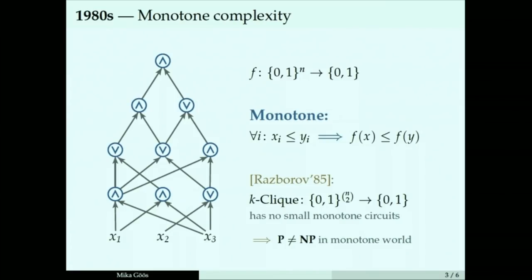Maybe it was a bit too optimistic. Turns out these models are a lot less powerful than fully general algorithms. One result to this effect was Tardos's function. She came up with a monotone function, I'll just call it Tardos, a monotone function that requires large monotone circuits, exponential size ones. Yet you can still compute the function efficiently with the usual algorithms. So it's a problem in P. This is showing that monotone circuits don't really model well what happens in the real world with negation gates.